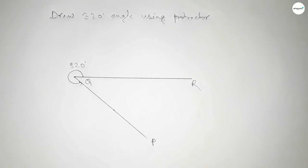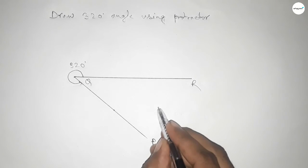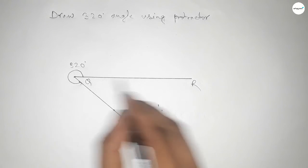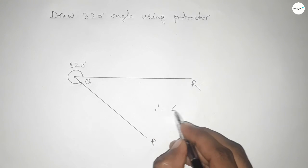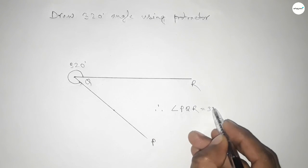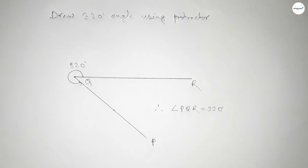So this is a 320-degree angle. Therefore, angle PQR equals, we can write, 320-degree angle.